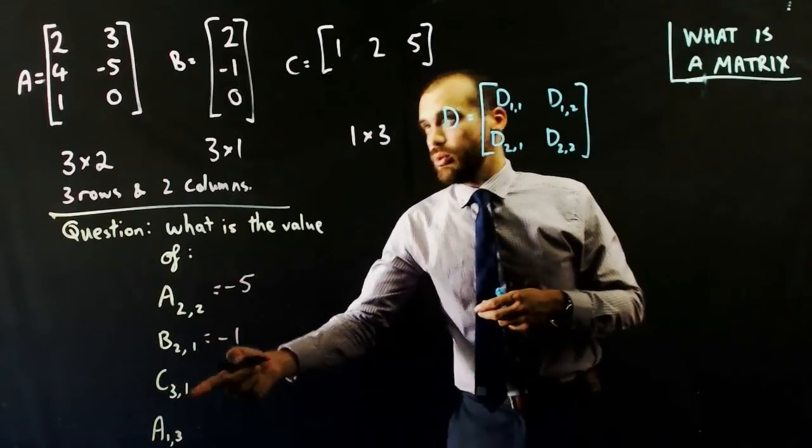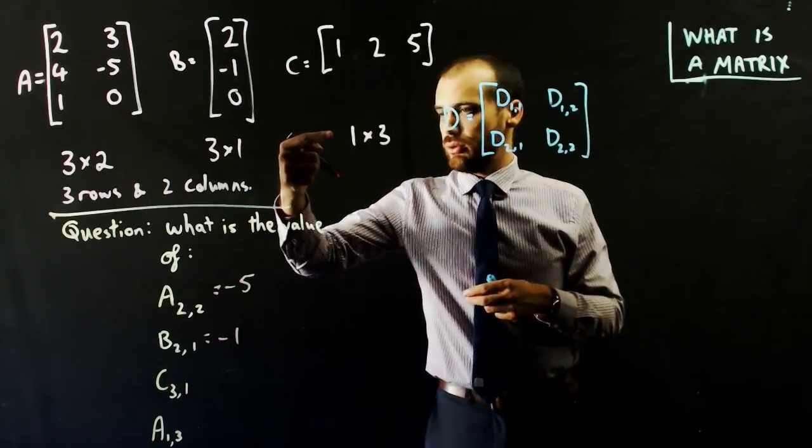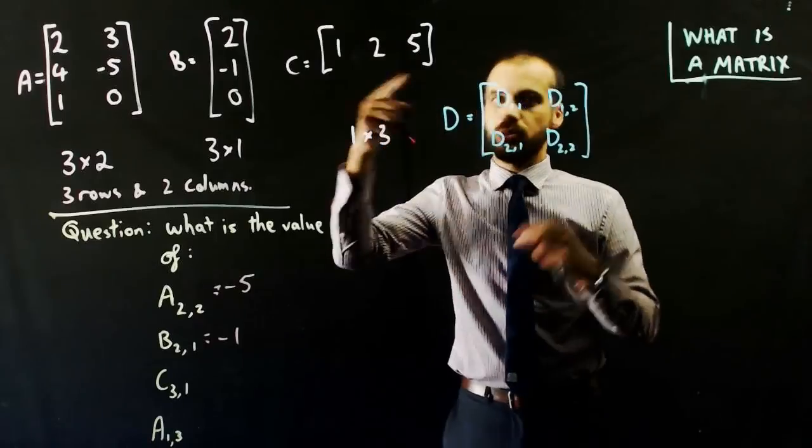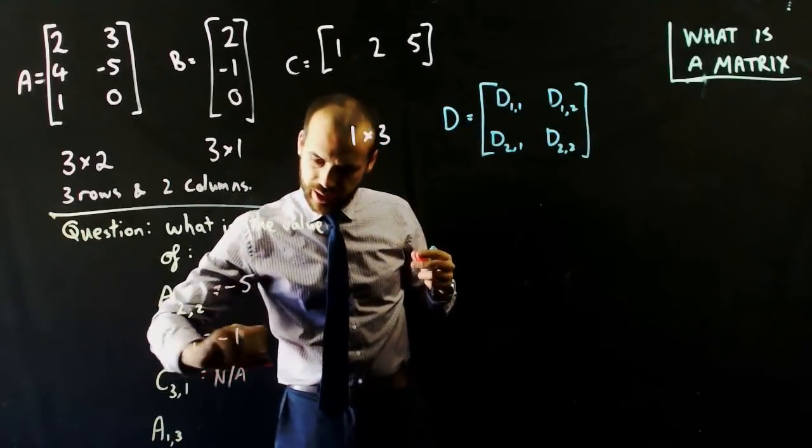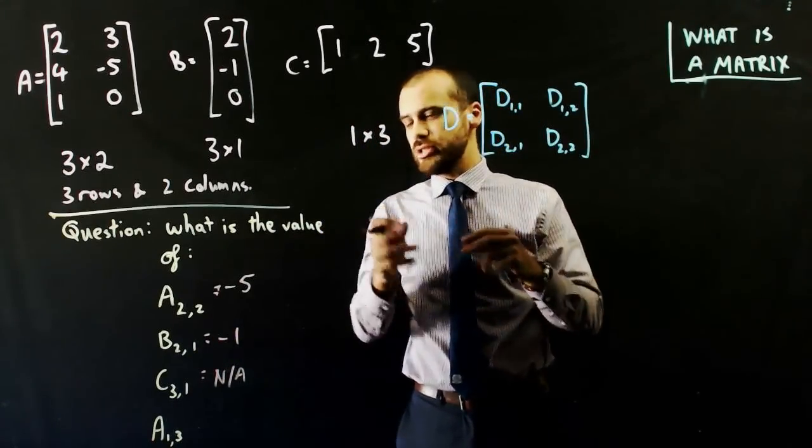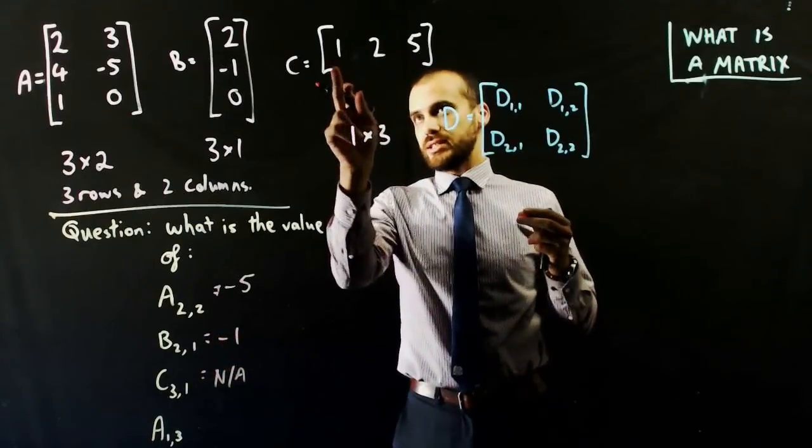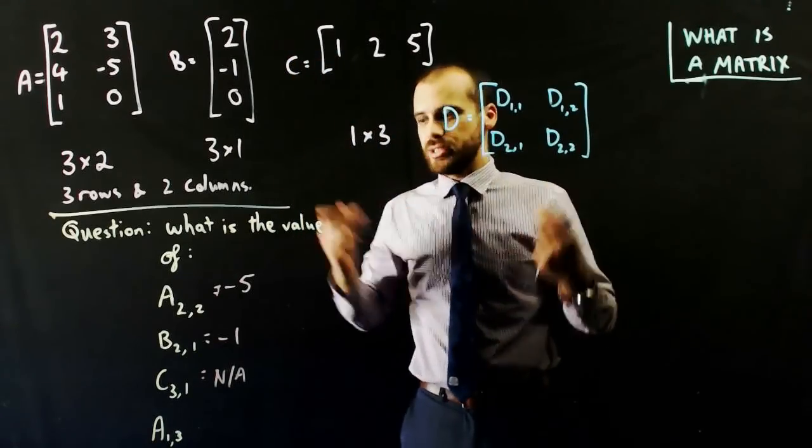Element C3, 1. So that's the third row, column 1. Look, hang on. C only has one row. So this one, N/A. There's no element 3, 1. It's sort of a trick question because a lot of people will mix it up and they'll think that actually that's column 3, row 1. But it's not, it's row 3, column 1. It doesn't exist.